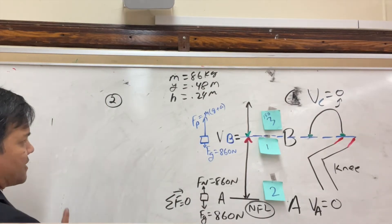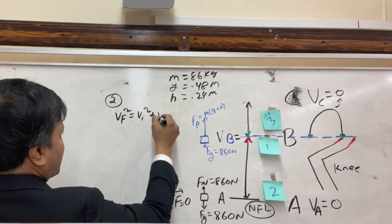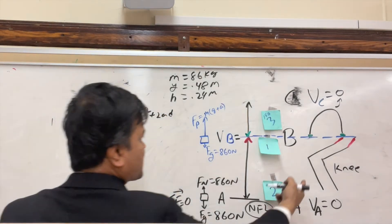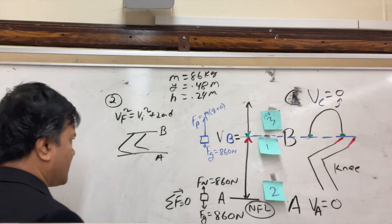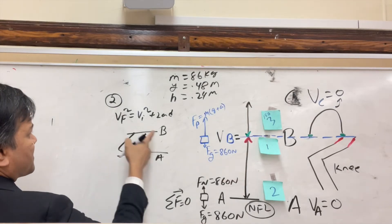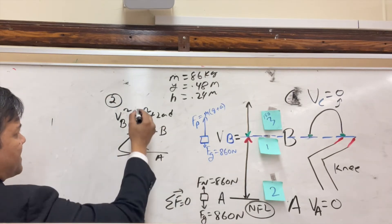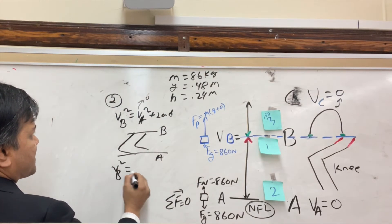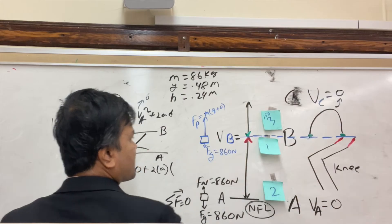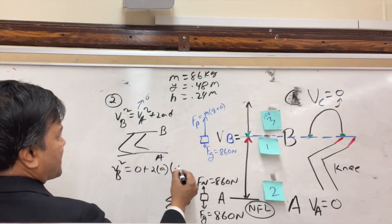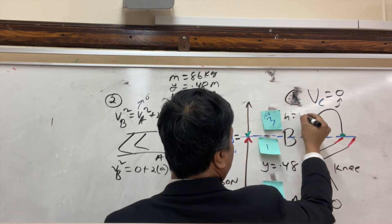At location B, we want to find the velocity. Using vf² = vi² + 2aD for the airborne (parabola) phase: from B to C, vC = 0, so 0 = vB² + 2(-10)(0.24). However, there are two unknowns in the squat phase, so we are forced to use the parabola phase first.